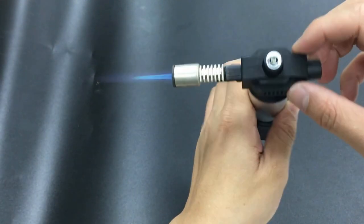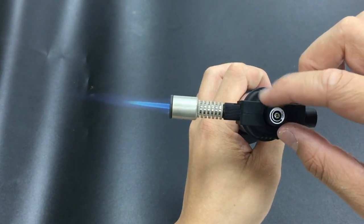To turn it off, just turn the gas valve clockwise like this.